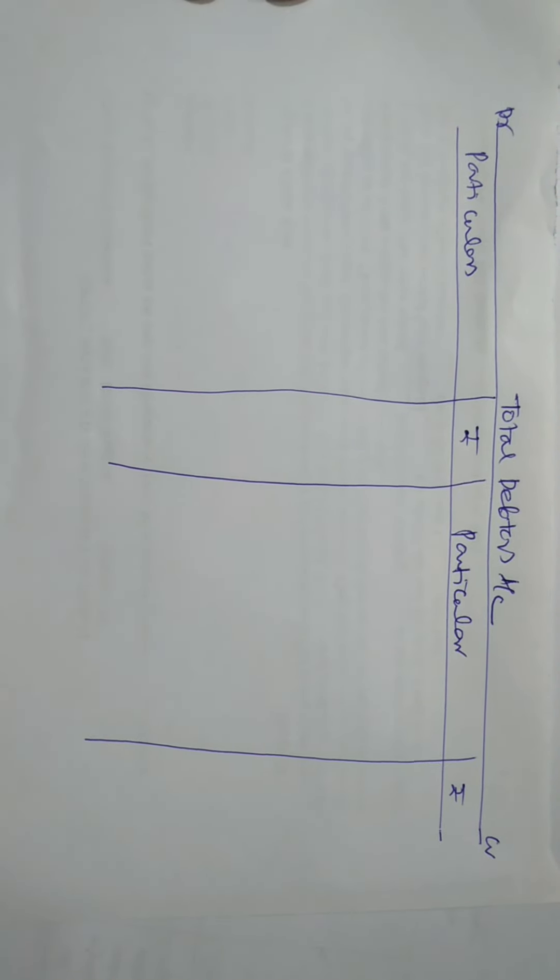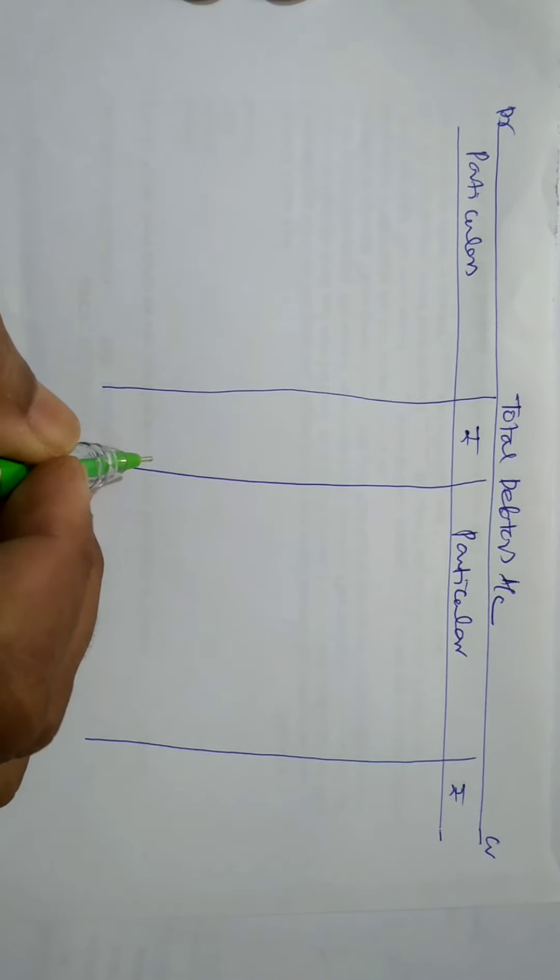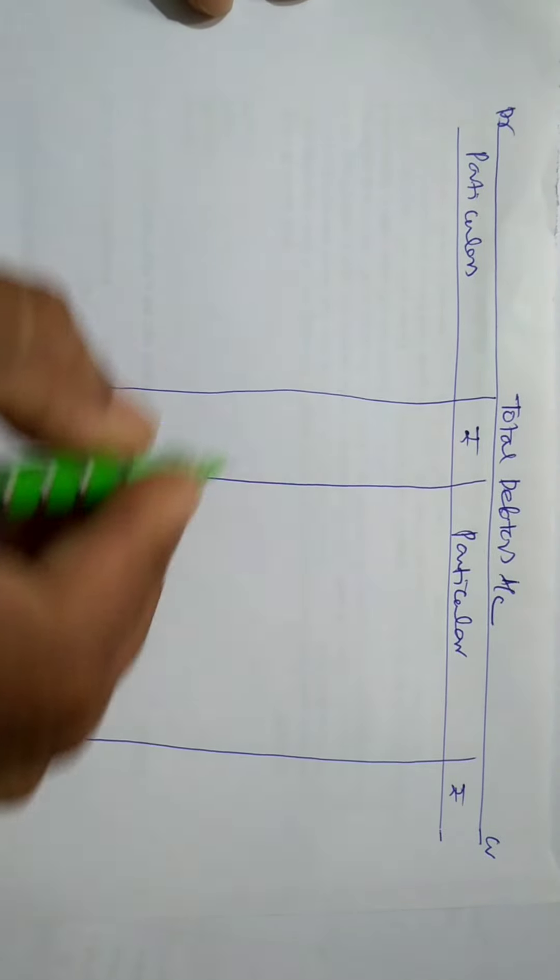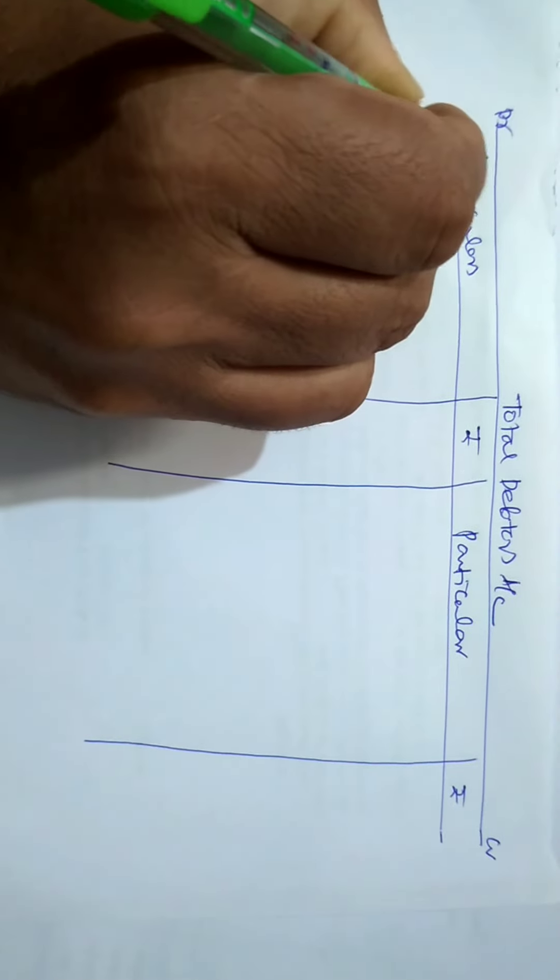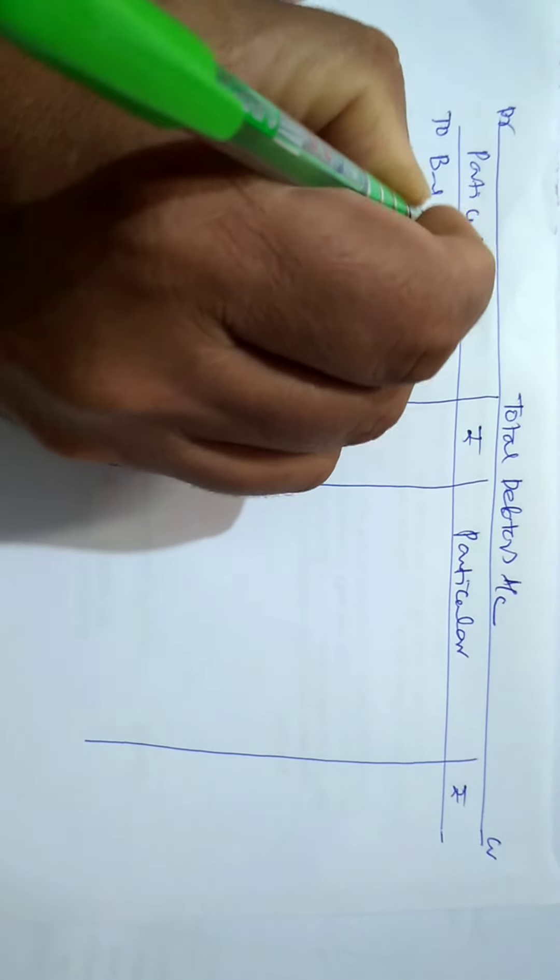Let us solve this problem. In this problem, the details are given. Based on these details, find out cash received from debtors from the following particulars. Debtors account is an asset account which shows opening balance, debit to balance, brought down.